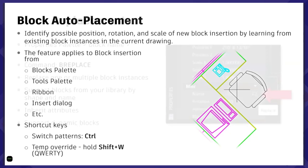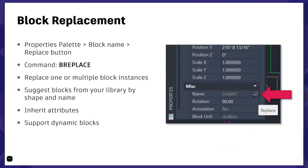The other half of this functionality is block replacement. There are a number of ways you can get access to this. It's a new command called BREPLACE and what it's going to do is look at the block you're saying you want to replace, then look at your library and determine what the possible replacement for this is - looking for similar shapes, similar names, things like that - and present some options.